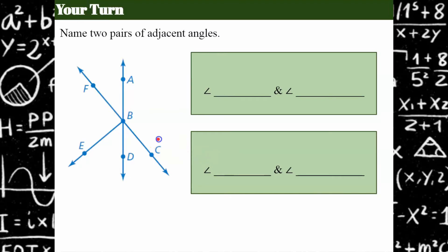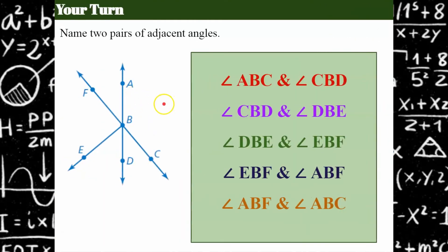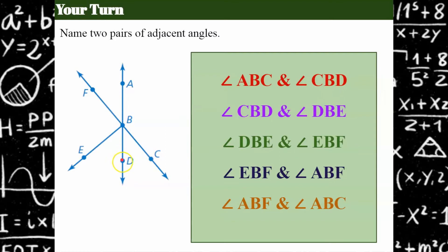Welcome back. Let's see how you did. There are lots of pairs, but I only asked you to name two. So angle ABC — remember that the vertex needs to be the middle letter when naming the angle. If this is not familiar to you, my previous video in this playlist will help you learn to name an angle. So ABC is adjacent to CBD — they share the CB ray.